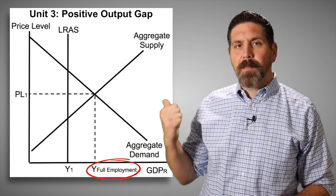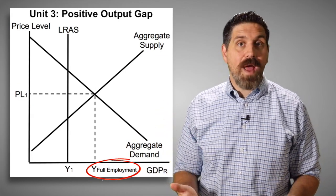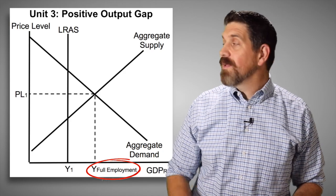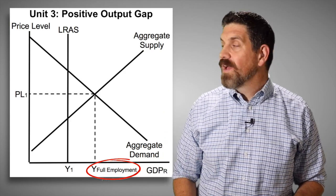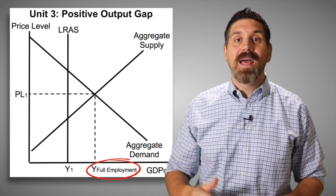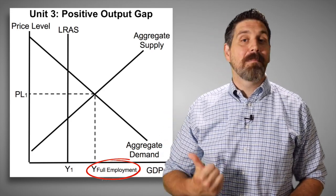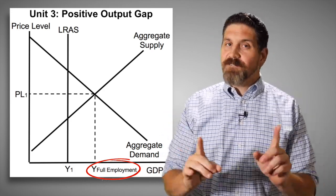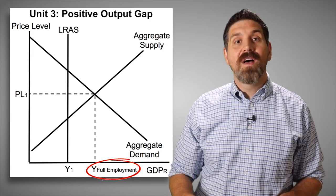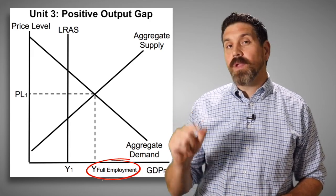For graph number three, showing a positive output gap, most of this graph is correct. We have price level, real GDP, vertical long-run aggregate supply curve, aggregate demand, aggregate supply. This graph is right, except from the bottom where it has that full employment. That is mislabeled, it's in the wrong spot. That vertical long-run aggregate supply curve, that's full employment. So this graph has only one mistake.